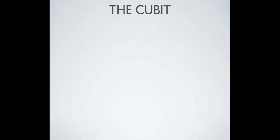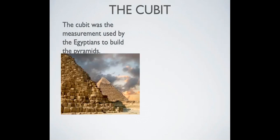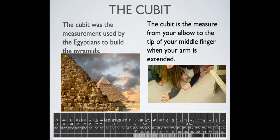These were all early forms of measurement, so we're going to start off with the cubit. The cubit was the measurement used by the Egyptians to build the pyramids. The cubit is the measure from your elbow to the tip of your finger when your arm is extended.